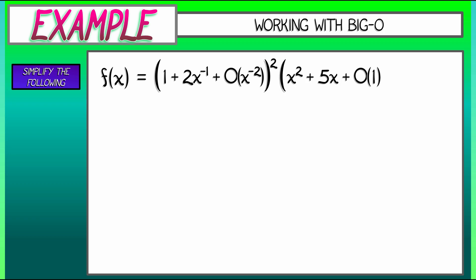Let's simplify the following function. I have quantity 1 plus 2 times x to the minus 1 plus Big-O of x to the minus 2, all of that squared, times quantity x squared plus 5x plus Big-O of 1, all of that to the negative one-half power. Let's be careful. This is in the limit as x goes to infinity. What happens? Well, the term on the left is going to 1, and the term on the right is going to, let's see, x squared to the negative one-half. That's going to zero. So this whole function is going to zero in the limit. But how quickly? That's what we need to figure out.